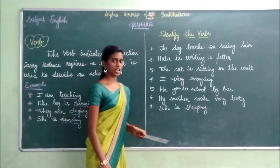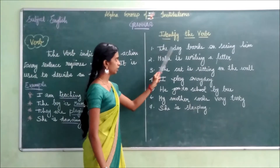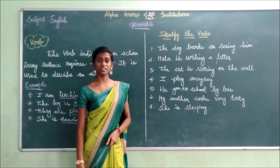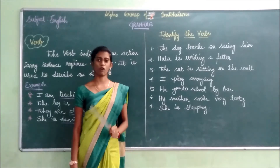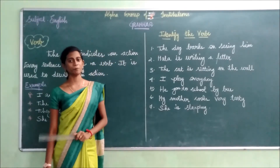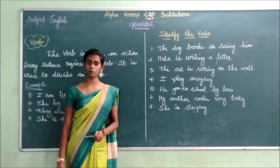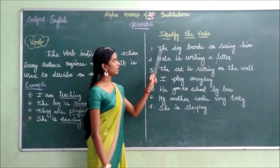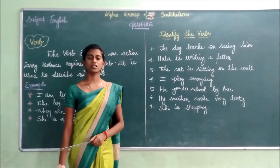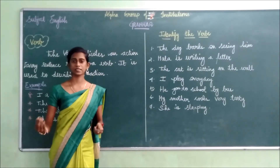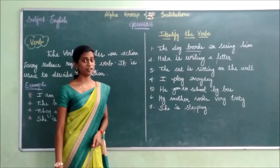I have given you some sentences. Shall we identify what is the verb? Look at the first one: The dog walks on seeing him. Can we identify the noun in the first sentence? The dog indicates the animal — it is known as the noun. Now, what is the verb here? The dog walks on seeing him — what is the dog doing? The dog is walking on seeing something. So walks is the verb because it indicates an action.